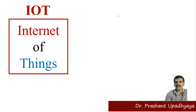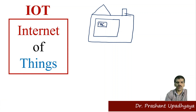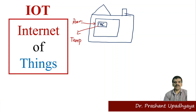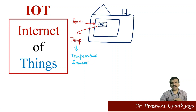Let me give you an example. Let's say this is your home and in this home you have one room in which you have installed an AC. What is the purpose of this AC? The purpose of AC is to maintain the room temperature — you can decrease the temperature if you're feeling hot or increase it if you're feeling cold. The AC senses temperature using a temperature sensor, which senses the current room temperature.